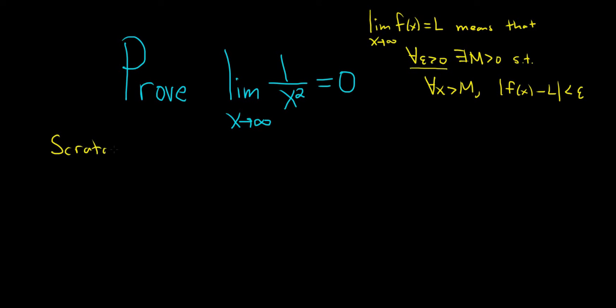So this is the scratch work. This is not the proof. This is the part where we figure it out. Let's work backwards. We need to find an M such that f of x minus L is less than epsilon. So I'm going to go ahead and write that down.